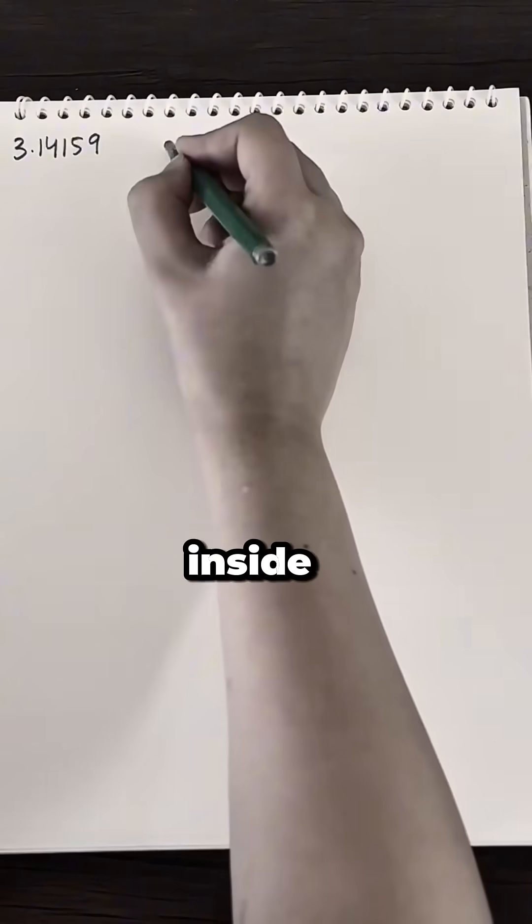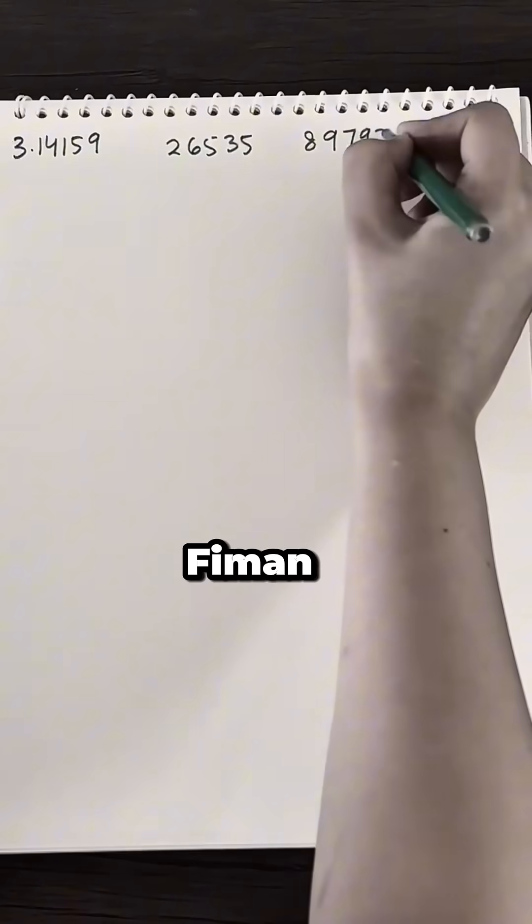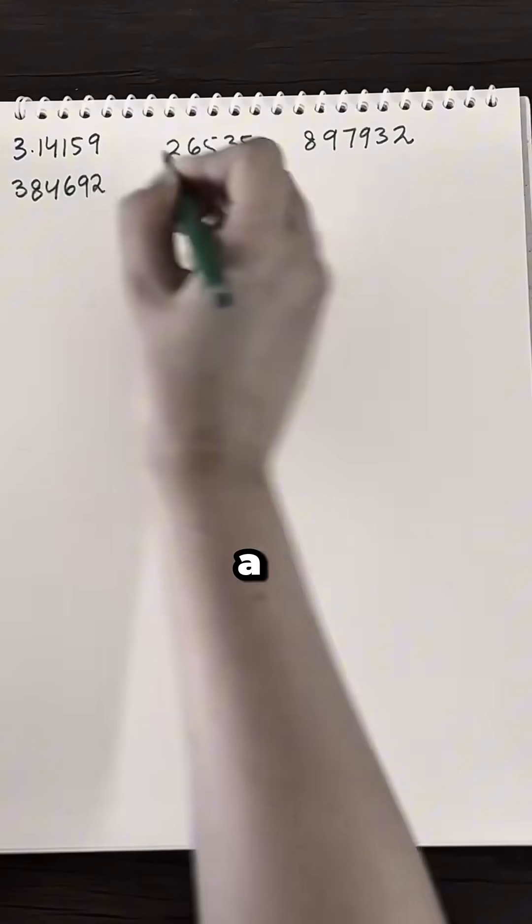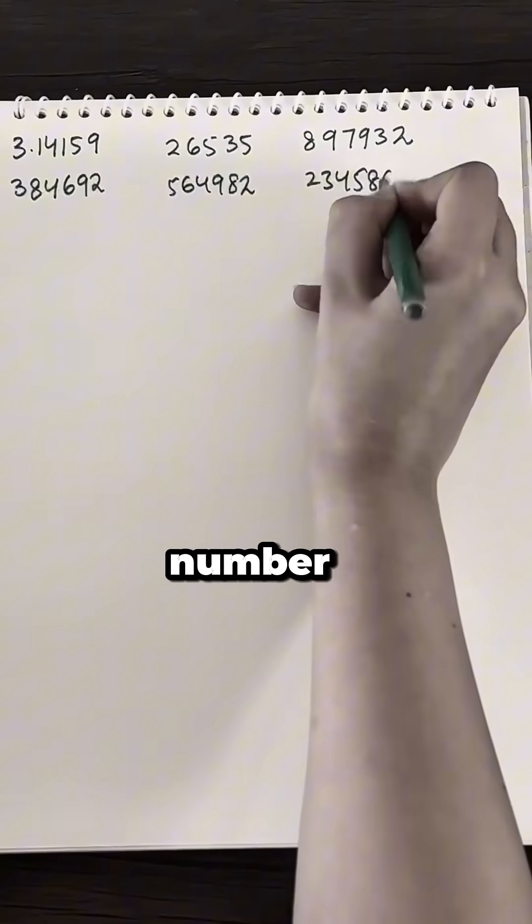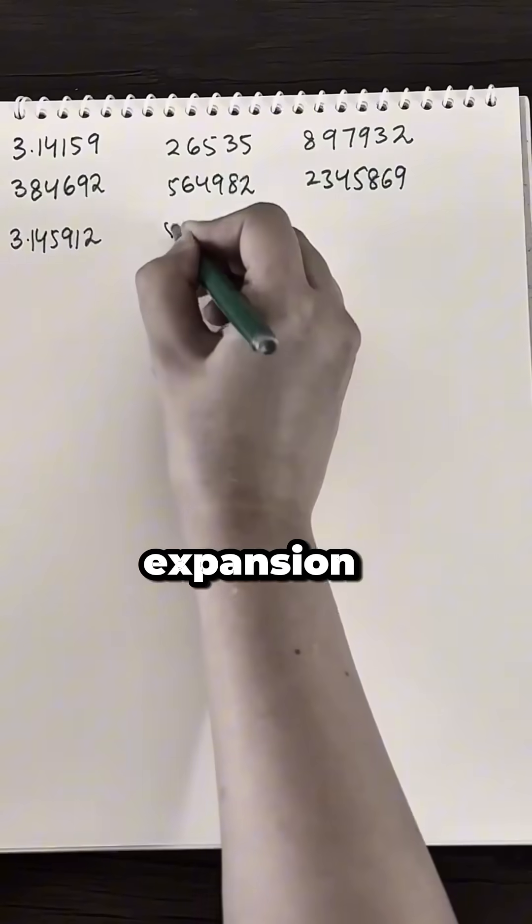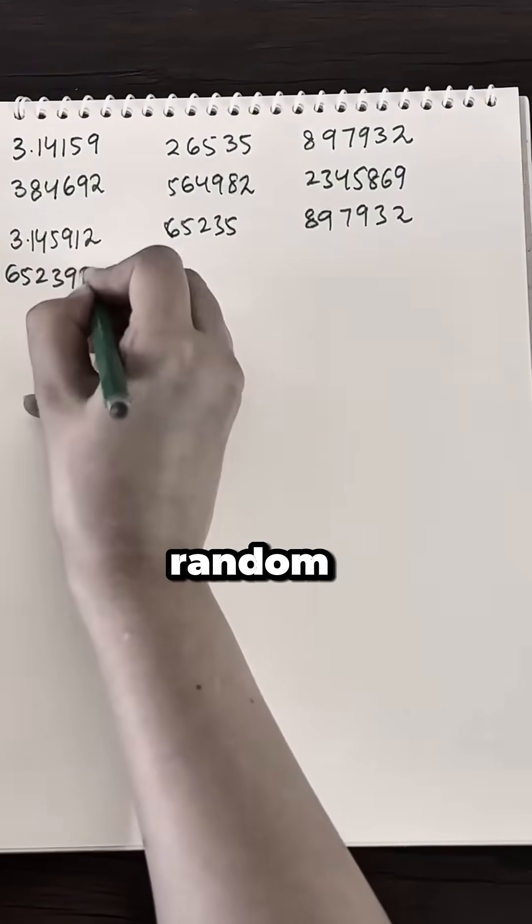One of the coolest hidden quirks inside Pi is something called the Feynman point. Pi is supposed to be a never-ending, irrational number, meaning its decimal expansion goes on forever without repeating, totally random.